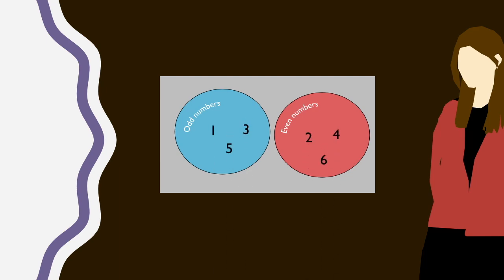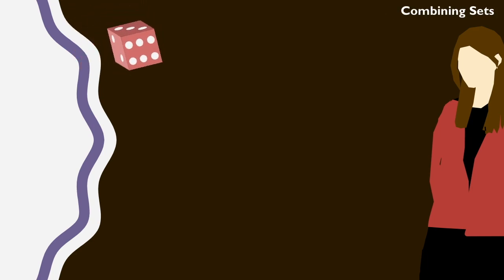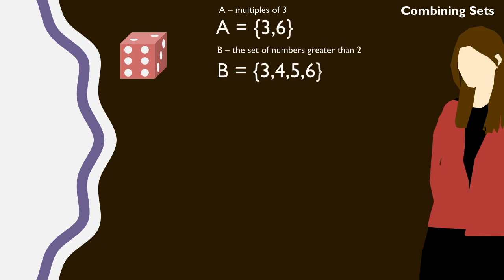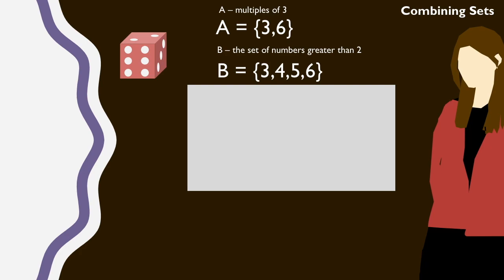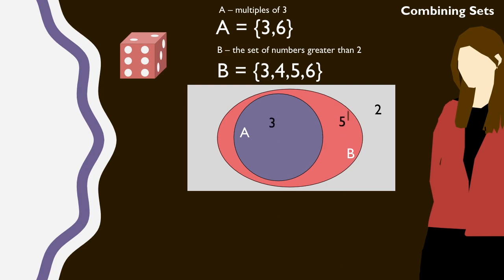On the other hand, we can also have sets that are subsets. For example, suppose from the outcomes of a die we have the sets A, multiples of 3, and B, numbers greater than 2. In this case, the Venn diagram looks like this, and we say that A is a subset of B.